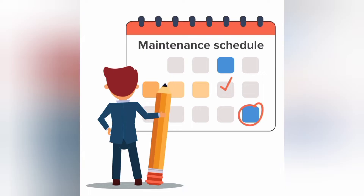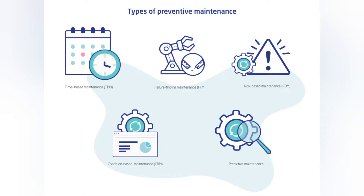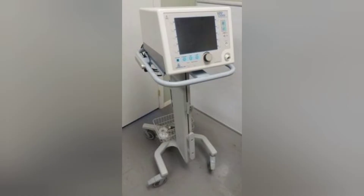Generally, all medical equipment requires at least two PMs in a year. Some critical equipment may require four in a year. Preventive maintenance should be done in ideal steps, one by one. The very first step is physical examination — when you go in front of any medical equipment, the very first thing to do is to observe the equipment physically without switching it on.